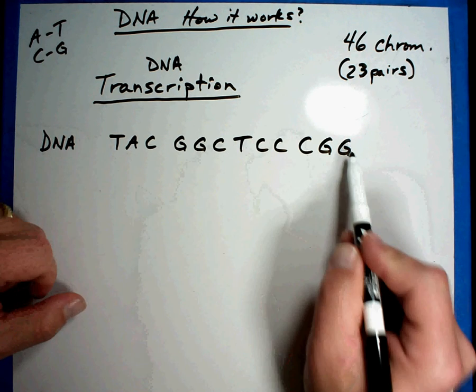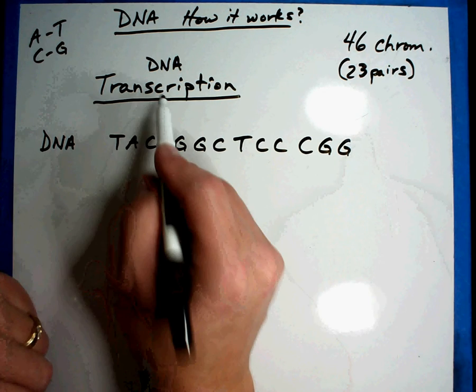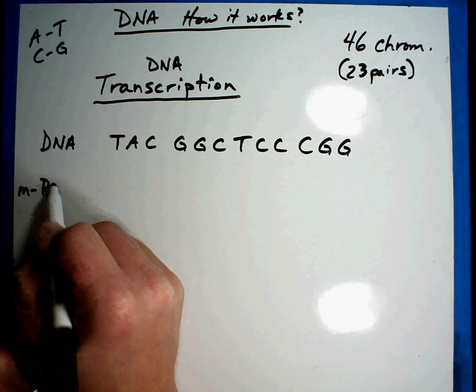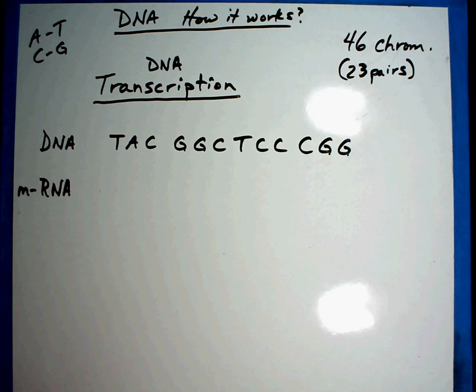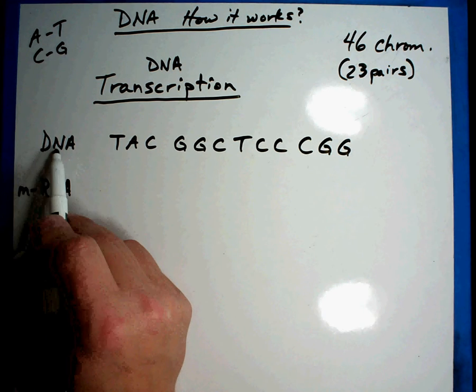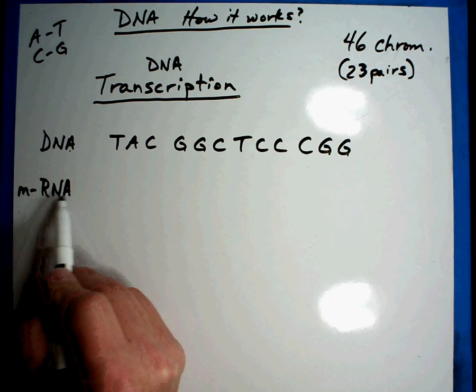Now what we're going to do first in transcription is we're going to make a piece of what is called messenger RNA. Now this is a little bit different. You'll notice that this one says DNA, deoxyribonucleic acid, and this one is RNA, just ribonucleic acid. The rules are a little bit different here.